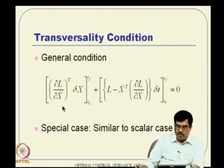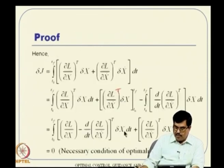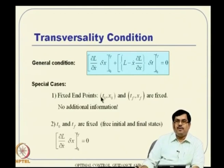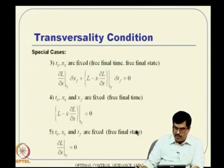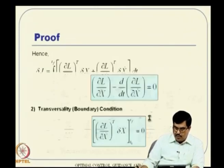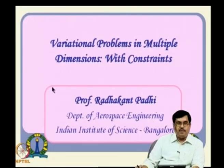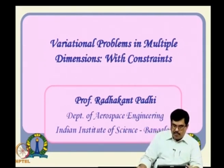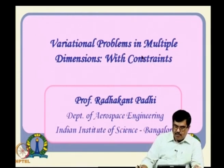The special cases include fixed endpoints, partly fixed conditions, or T-naught and Tf both fixed with states free. Everything is very parallel to what was discussed for the scalar case—just be slightly careful about the algebra. This completes the free optimization discussion. Now, constrained optimization is more important, because many of our problems will invariably have an equality constraint in the form of a state equation.